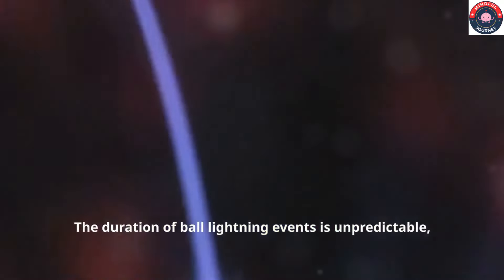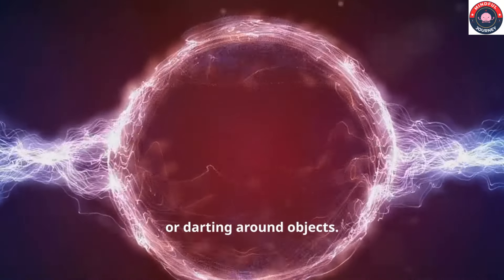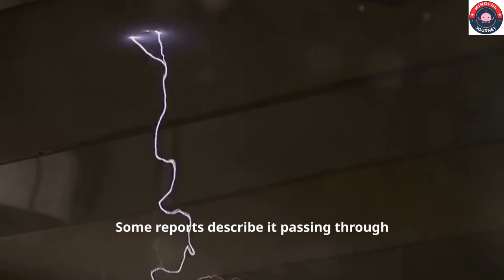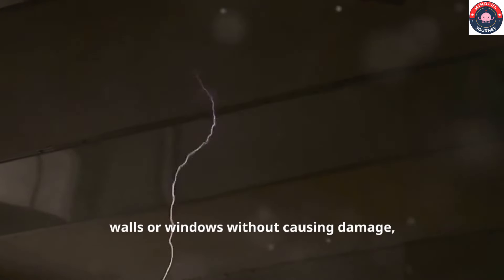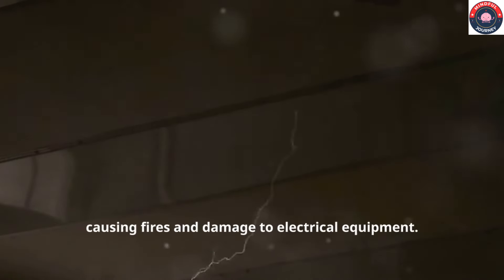The duration of ball lightning events is unpredictable, ranging from a few seconds to several minutes. It often moves erratically, floating through the air, hovering or darting around objects. Some reports describe it passing through walls or windows without causing damage, while others detail its explosive nature, causing fires and damage to electrical equipment.